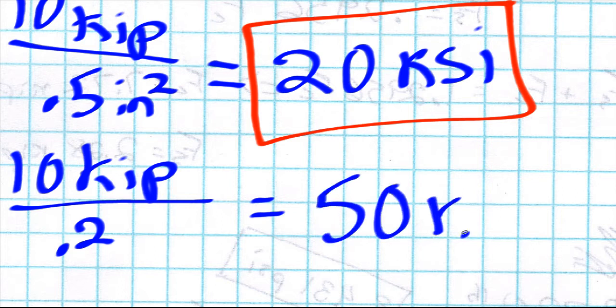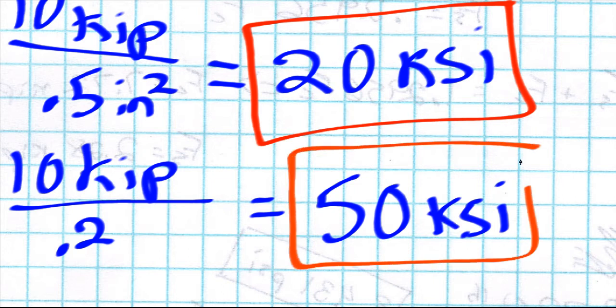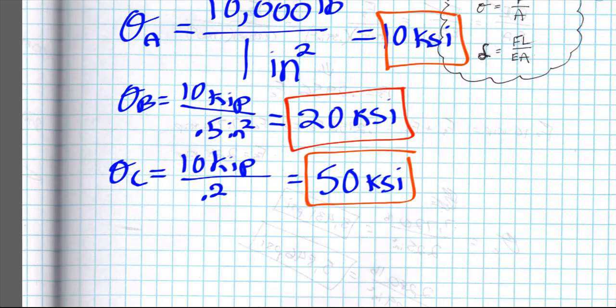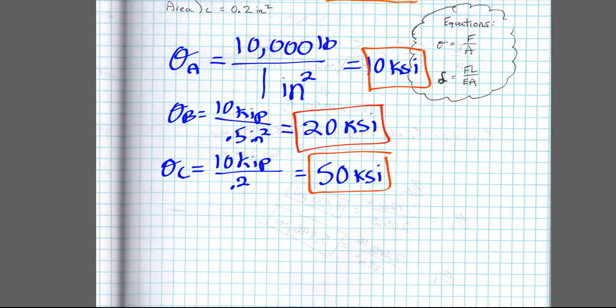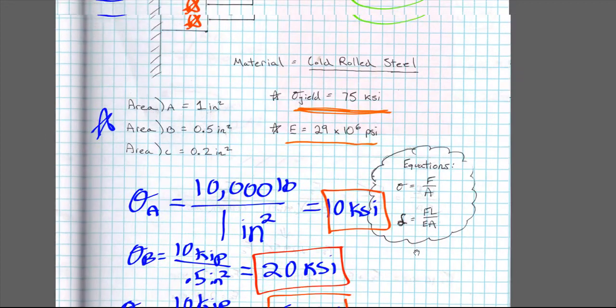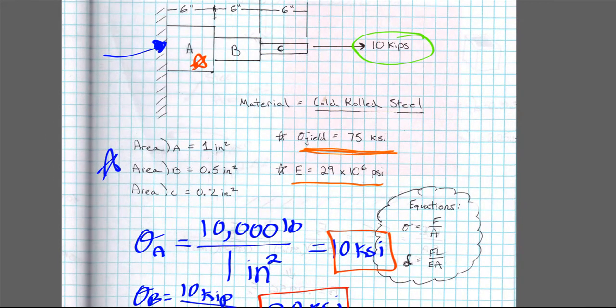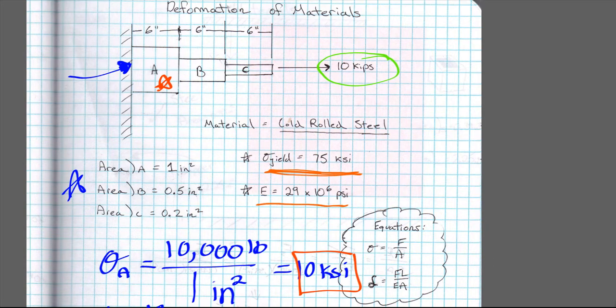For C, it's 10 kips over 0.2 inches squared, which is going to equal 50 ksi. Okay, so what did we learn from this? 10, 20, and 50 - all of them are below our number right here of 75 ksi.